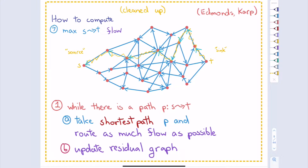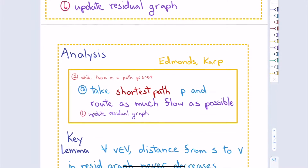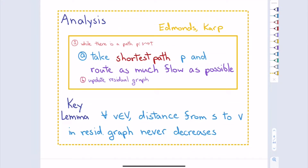We had an original algorithm, Ford-Fulkerson, which was sort of fine for edge-disjoint paths, but with capacities it can be slow because each iteration only routes one unit of flow. The subsequent lecture introduced the shortest augmenting path idea of Edmonds-Karp — almost a natural heuristic. You're implementing the augmenting path approach, but always choosing the shortest path from S to T in the residual graph, meaning fewest number of edges.